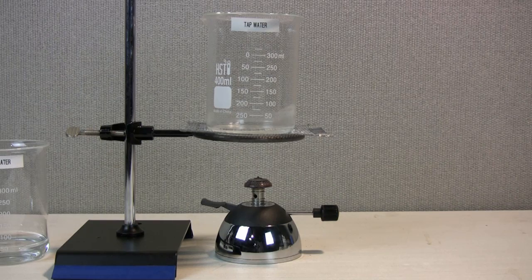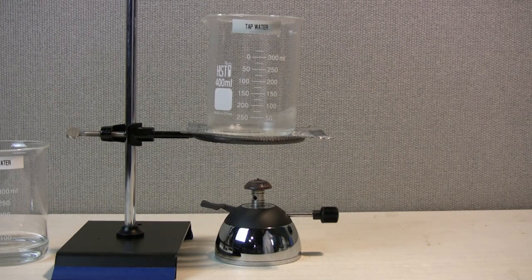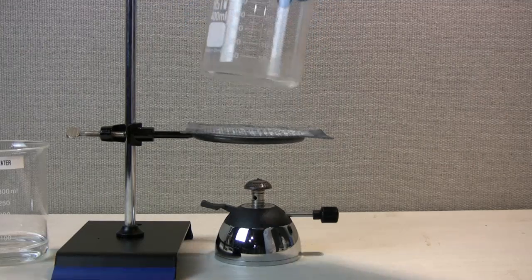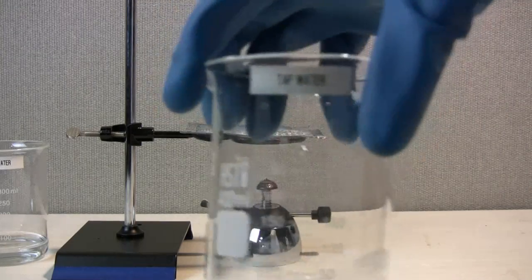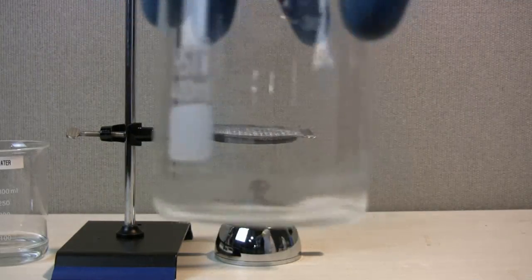Once the water has boiled down to about a quarter of an inch, we turn off the heat and let the beakers cool for two minutes. The remaining water is then swirled around each beaker for five rotations and is poured out.